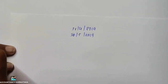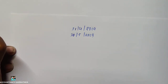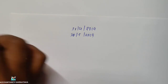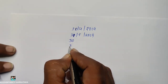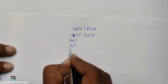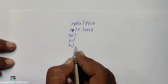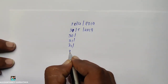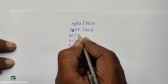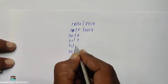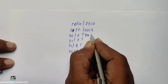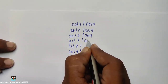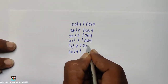The months in the half year ending 30th September 2019 are: April 30, May 31, June 30, July 31, August 31, September 30 — that is months 4, 5, 6, 7, 8, 9 of 2019.